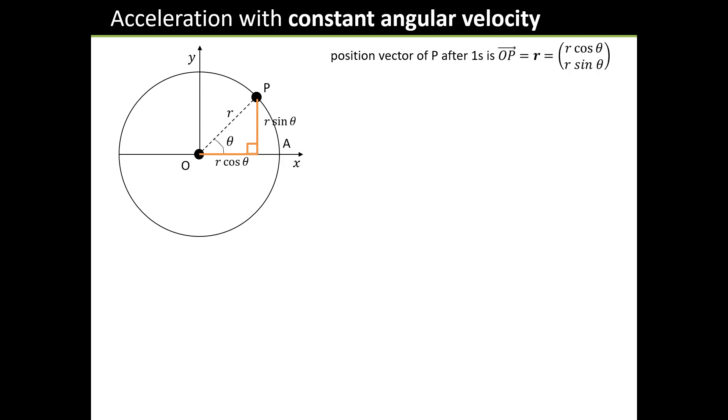If p is moving around the circle with an angular velocity of θ radians per second, we can now write down the position vector of p after exactly one second. That vector OP has a very definite direction. We'll come back to that later because it turns out to be really important. But for the time being, let's just focus on that position vector.